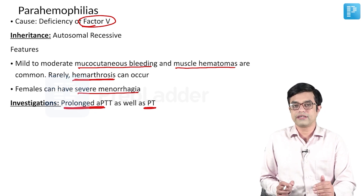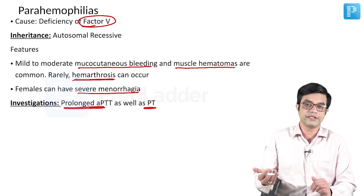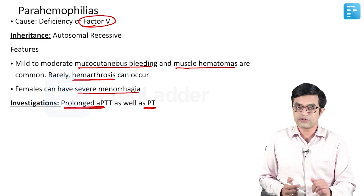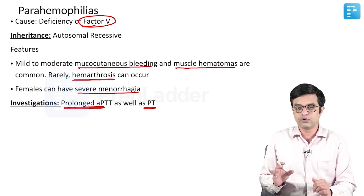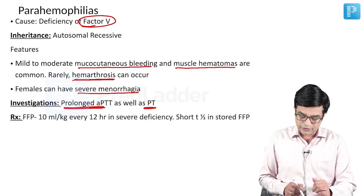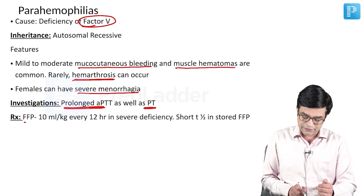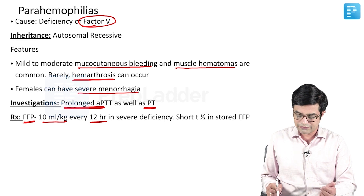Activation of factor XA is generally considered to be part of the common pathway, and so prolonged PT and APTT both will be seen in these patients. Treatment will be FFP in a dose of 10 to 15 ml per kg every 12 hours in severe deficiency.